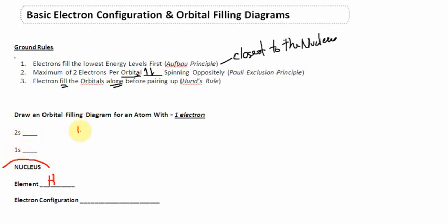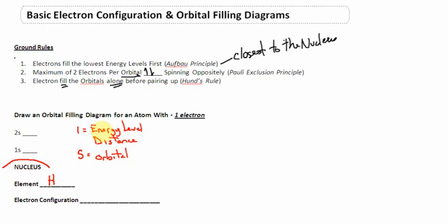Let's express what this notation means. The 1 or the 2 indicates the energy level — it also could be considered the distance from the nucleus. 2 is farther away than 1, that's a higher energy level. The S is simply the orbital type. My electrons will fill the lowest energy level first, and I have one electron in this case. I'm going to draw it signified by an arrow going upwards, indicating I have one electron on the first energy level in the S orbital.